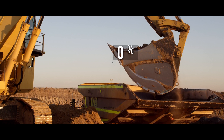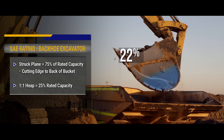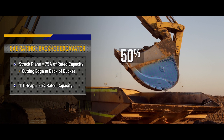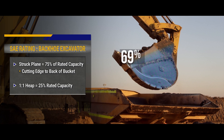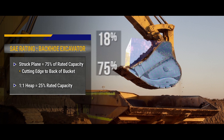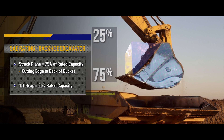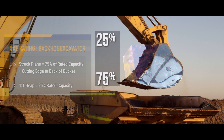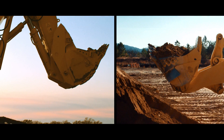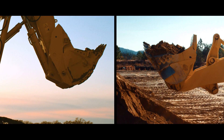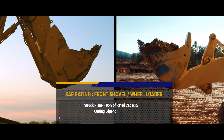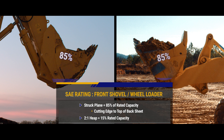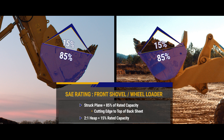For a backhoe excavator, 75% of the rated capacity is at the struck plane and 25% is in a one-to-one heap above the struck plane. For a front shovel, as well as a wheel loader, the struck plane of the bucket represents 85% of the rated capacity and a two-to-one heap above the struck plane accounts for the remaining 15%.